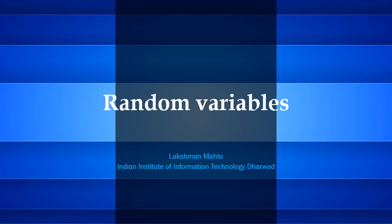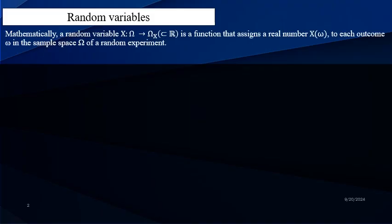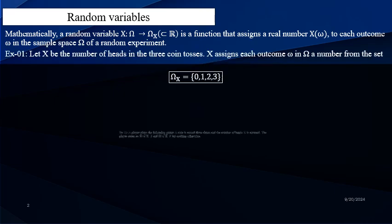Now here I will give the formal definition of random variable. Once you say formal definition, mathematical concepts are coming in. It would be a function again from sample space omega to R, but in a very formal way. That formal way we will see here.